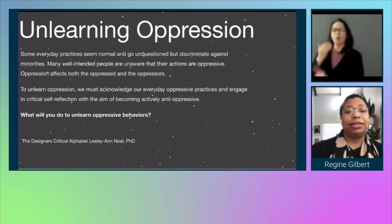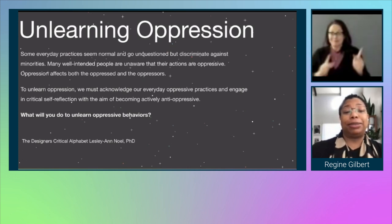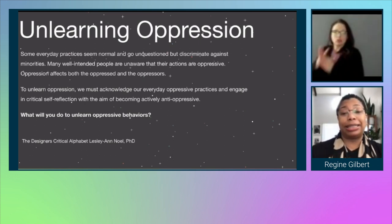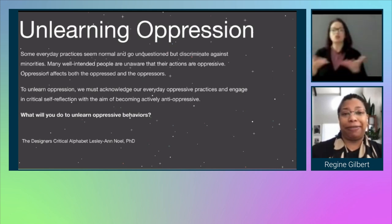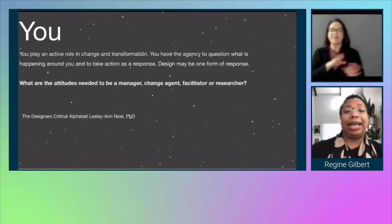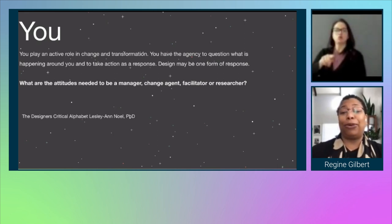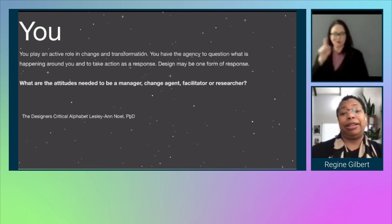Unlearning oppression. Some everyday practices seem normal and go unquestioned, but discriminate against minorities. Many well-intended people are unaware that their actions are oppressive. Oppression affects both the oppressed and the oppressors. To unlearn oppression, we must acknowledge our everyday oppressive practices and engage in critical self-reflection with the aim of becoming actively anti-oppressive. The question to ask is: what will you do to unlearn oppressive behaviors? You play an active role in change and transformation — you have the agency to question what is happening around you and take action. Design may be one form of response. What are the attitudes needed to be a manager, change agent, facilitator, or researcher?